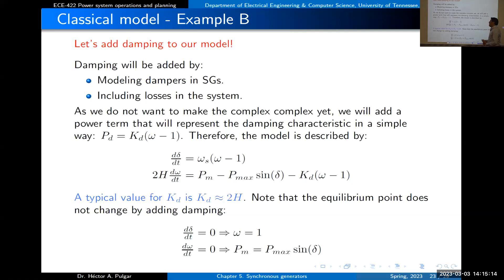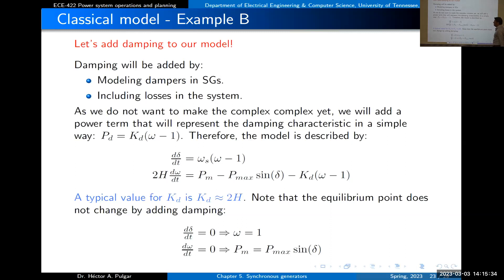Typically we assume K_D = 2H. Since power is in per unit and speed is in per unit, K_D is in per unit. So if H = 10 seconds, then K_D = 10 per unit. Adding damping modifies the second differential equation: dω/dt = (P_m − P_e − K_D·(ω − 1)) / (2H).